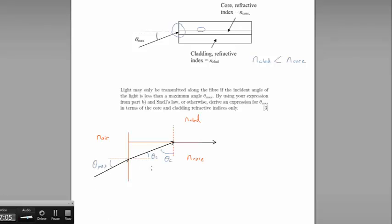We have light entering the glass core from air at an angle of theta max — the angle that will just produce total internal reflection. It is then refracted through an angle theta 2 and hits the boundary between the core and the cladding at the critical angle theta c from the normal, resulting in the light moving along the boundary. We can see that theta c equals 90 minus theta 2.